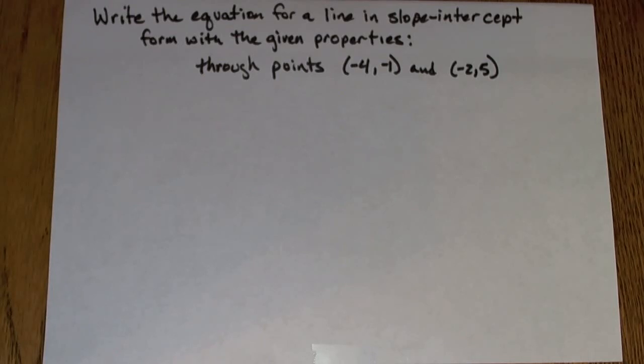This problem asks us to write the equation for a line in slope-intercept form with the given properties. The line goes through the points (-4, -1) and (-2, 5).